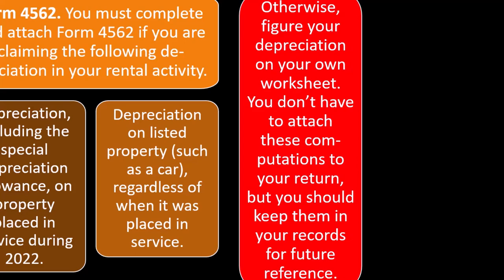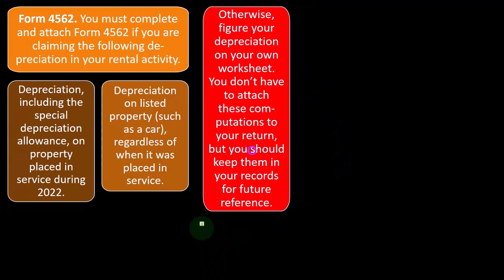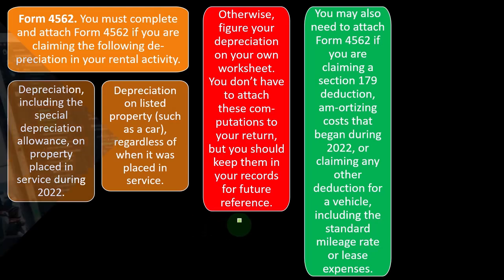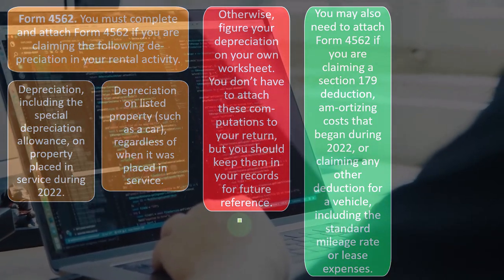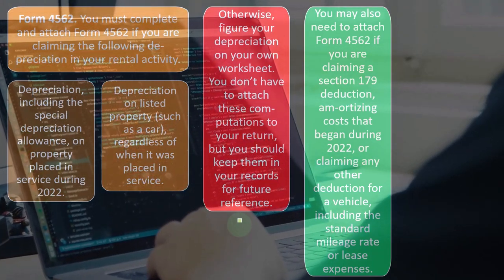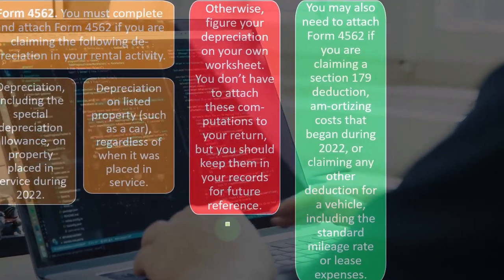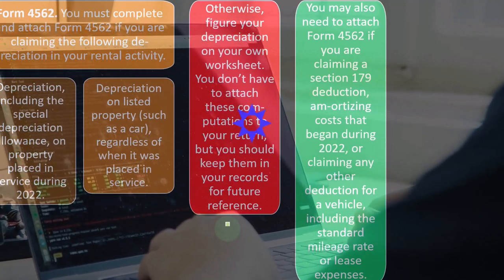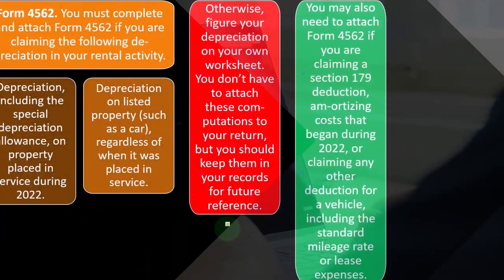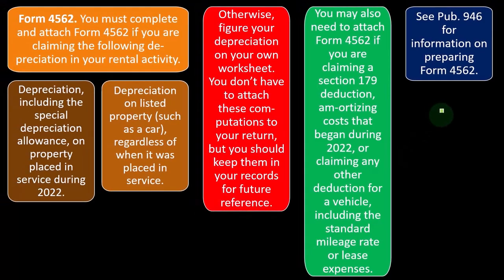Enter the prior return depreciation schedules, matching what was reported in the prior year, and then roll it forward into the current year so the software can help you out. You may also need to attach Form 4562 if you are claiming a Section 179 deduction, amortizing costs that began during 2022, or claiming any other deduction for a vehicle including the standard mileage rate or lease expenses. See Publication 946 for information on preparing Form 4562.